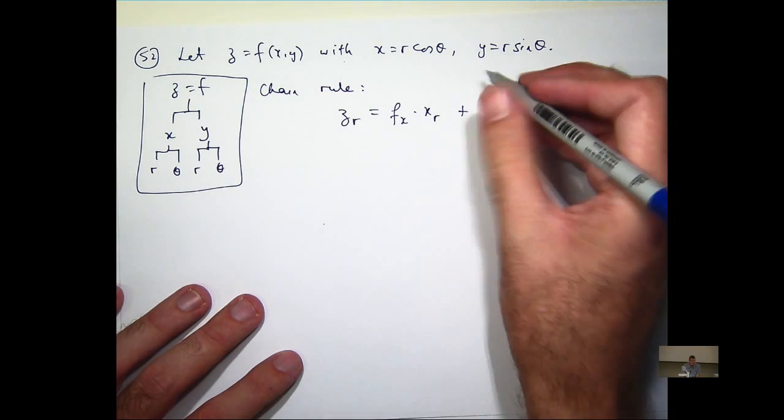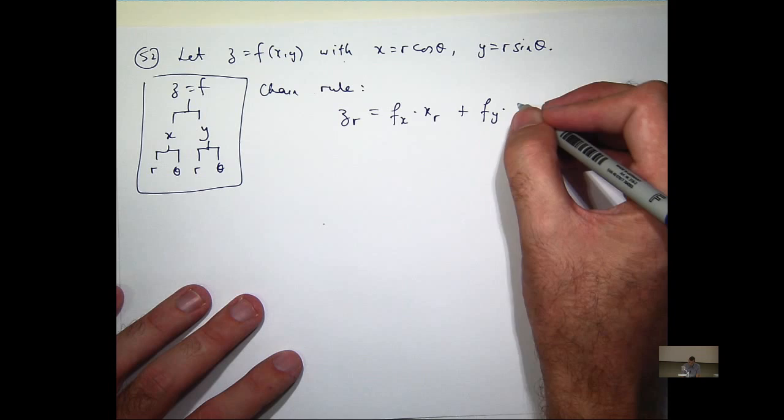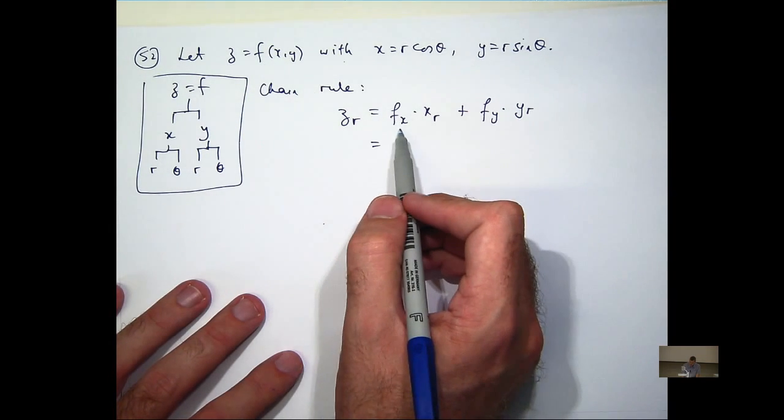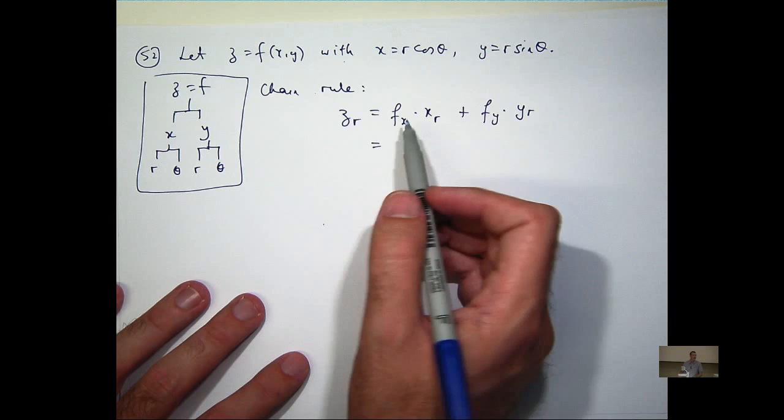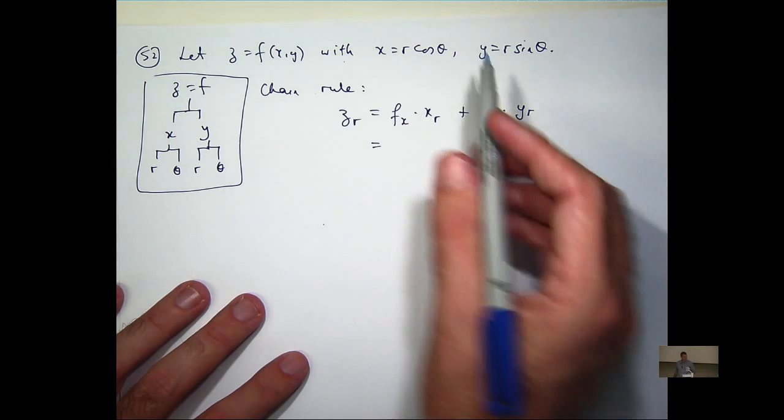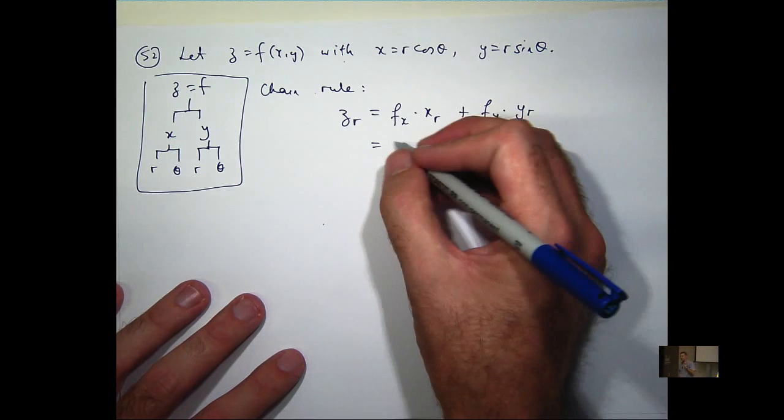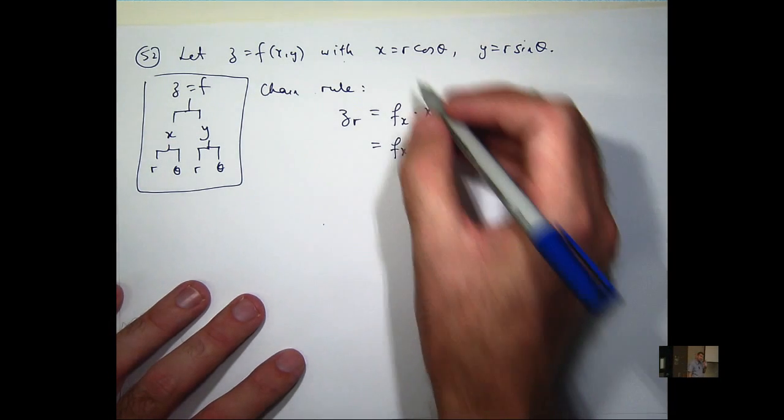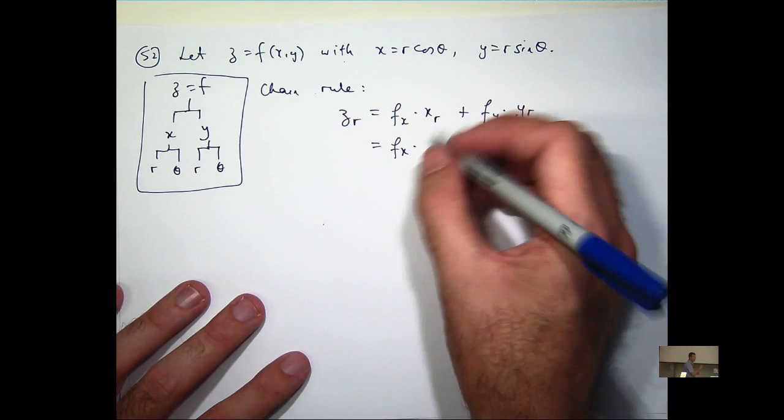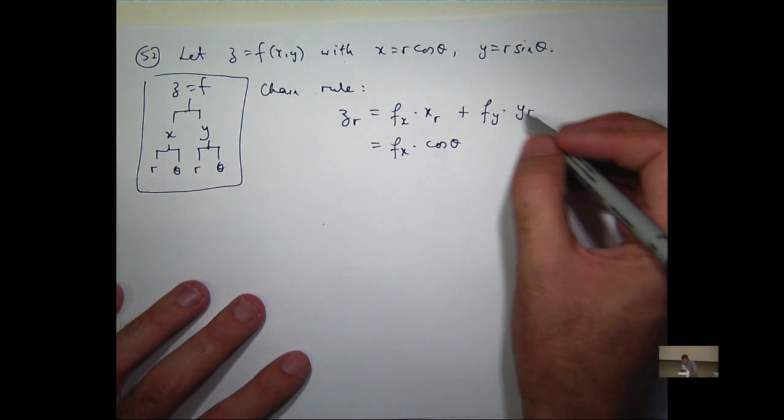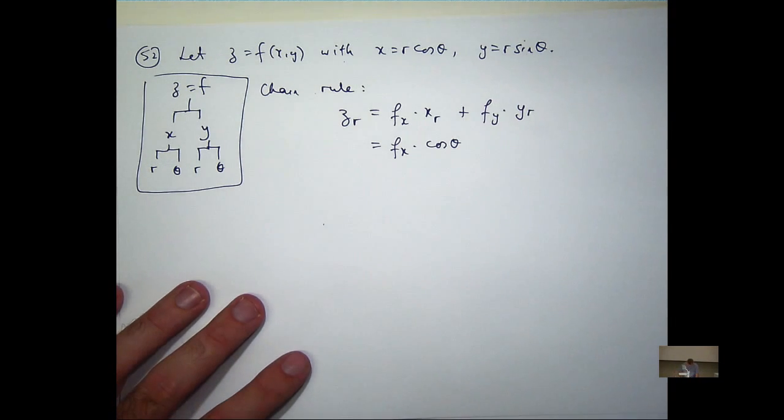df/dy times dy/dr. Now I don't know what f is, so there's no way I can calculate f sub x. I've just got to leave it. But I do know the relationship between x and r and theta and y and r and theta. So x sub r, what's that going to be? That's going to be cosine theta. y sub r is going to be sine theta.